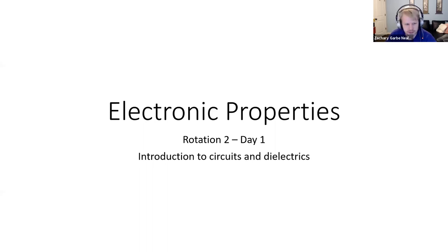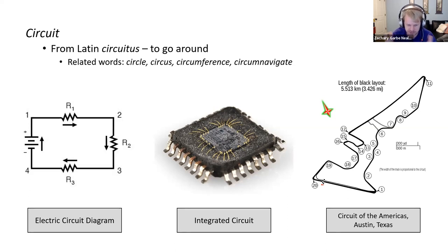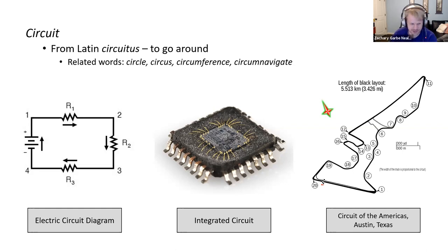We'll start by looking at what a circuit is. The word comes from the Latin root 'circuitus,' which means to go around — it has related words like circle, circumference, something having to do with the perimeter or going around something. Here are some examples of different circuits. We'll be dealing with electric circuit diagrams in this lecture, calculating voltage and current across elements like resistors.